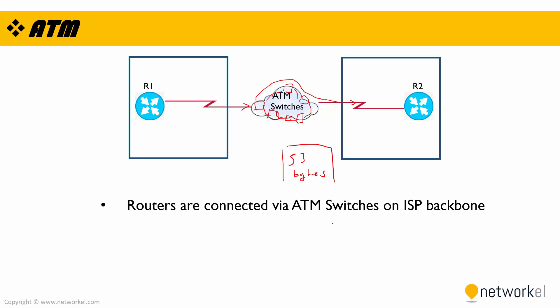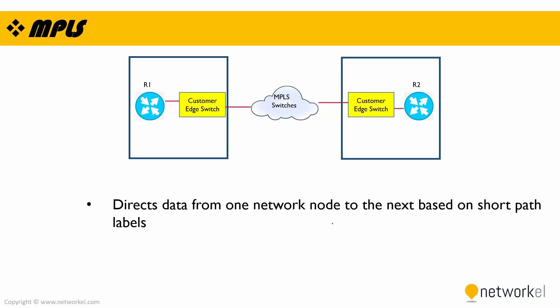ATM is also a legacy WAN technology. On the ISP and telecommunication networks, we are no longer using ATM, dial-up, or leased line as much — these technologies are about to die. The technology we are now using is MPLS. MPLS directs data from one network node to the next based on short path labels. Our routers at each location are connected via MPLS switches on the ISP backbone.